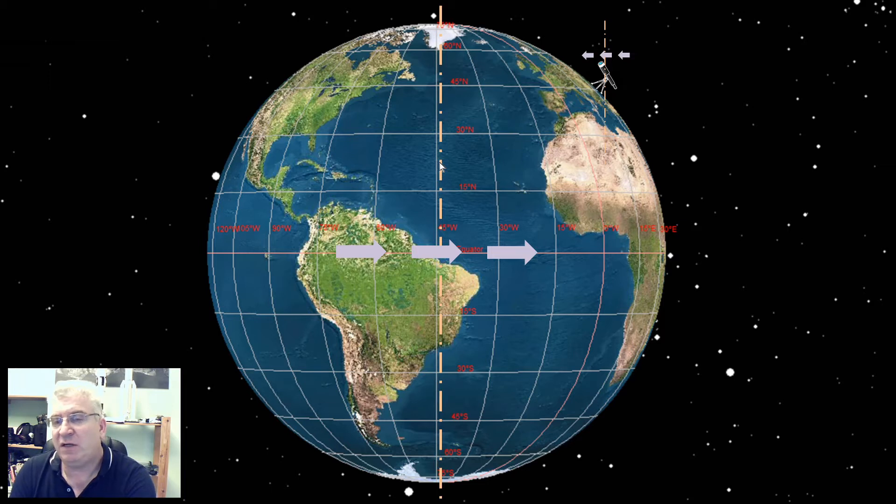That process of aligning that axis is called polar alignment. It's generally applied on what's called a German equatorial mount, which have two axes, one called the right ascension and the other one called the declination. Those axes are organized so that the right ascension axis is the one that is parallel to the Earth's rotational axis. The declination axis is simply at right angles to that to give us that other degree of freedom for pointing at different things in the sky.